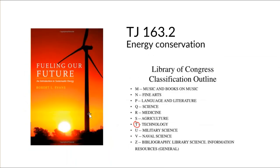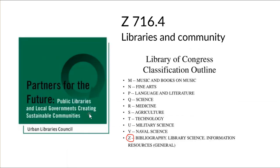T in technology covers books on energy conservation and alternative energy technologies and their relationship with sustainable cities. And finally, even in the Zs — in library science — we find a book on public libraries and sustainable communities.